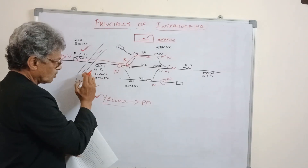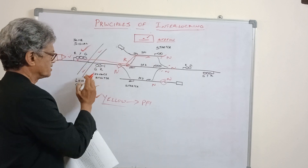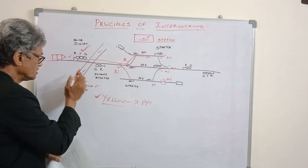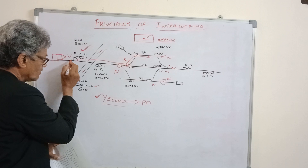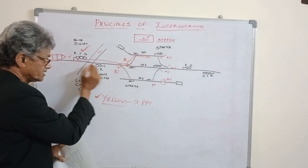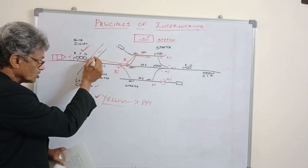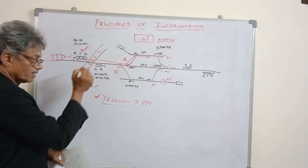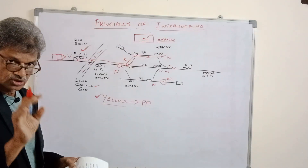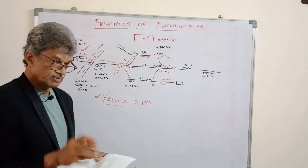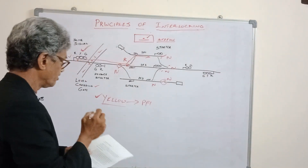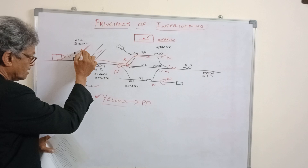Why must the level crossing gate be closed against road traffic? Because if you open the level crossing gate and permit road traffic, then the train will come on its journey and there is every possibility of a road accident at the level crossing. So that must be arrested and avoided. After the signal has been taken off, here is the signal taken off.